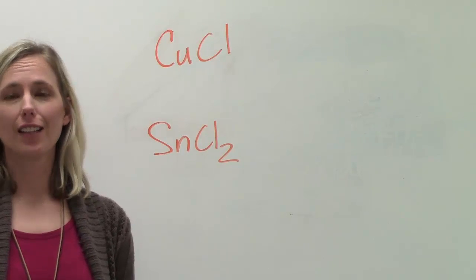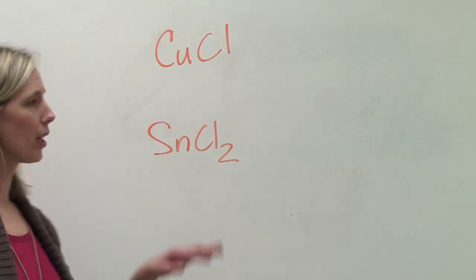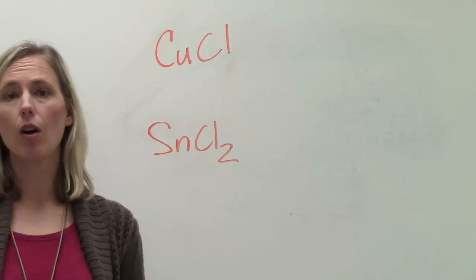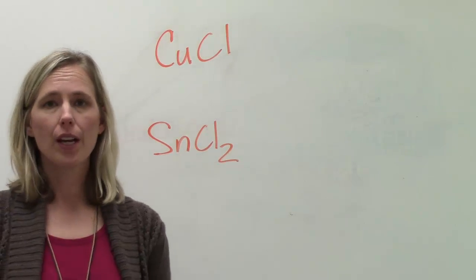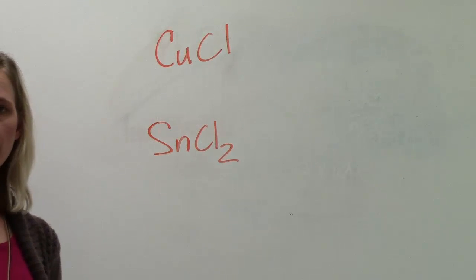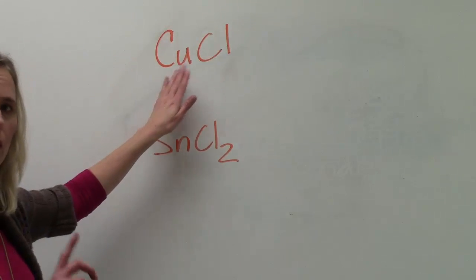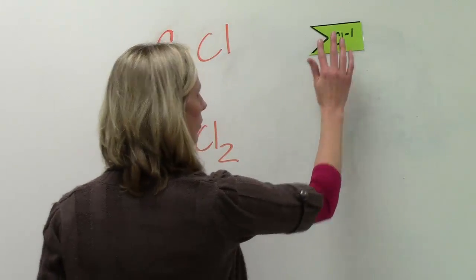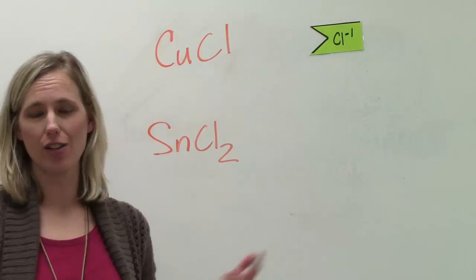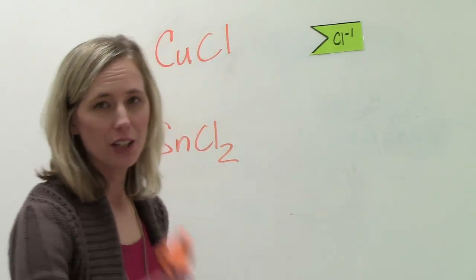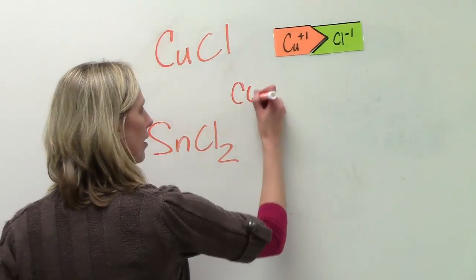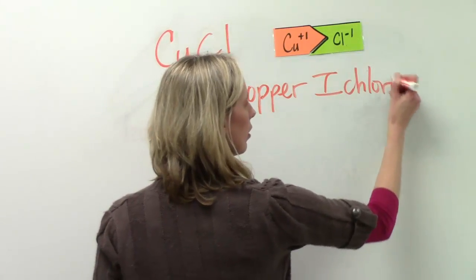Let's practice transition metals a little bit more. I give you the formula CuCl. Copper is one of those transition metals that can do more than one charge — you've got to figure out what the charge is and indicate it with a Roman numeral. The formula shows one copper and one chloride. If I've got one chloride and it's a negative one, the charge on the copper has to cancel out that charge, so it must be a positive one. We would write the name of this compound as copper one chloride.